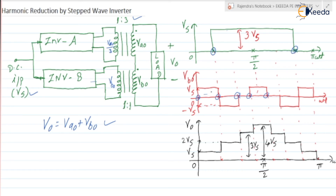To get VS as output we turn on S1 and S2; to get minus VS we turn on S3 and S4. We have intentionally operated the switches to get this type of waveform. V0 equals VA0 plus VB0. Here VA0 is 0, so V0 equals 0 plus VS = VS. Then it is 3VS minus VS = 2VS. During this interval 3VS plus 0 = 3VS. Then 3VS plus VS = 4VS. Similarly 3VS plus 0 = 3VS, then 3VS minus VS = 2VS, and 0 plus VS = VS. So we can construct this complete stepped waveform.